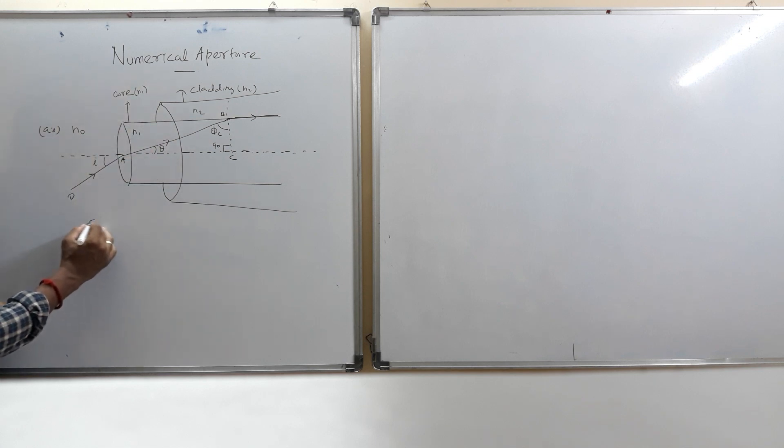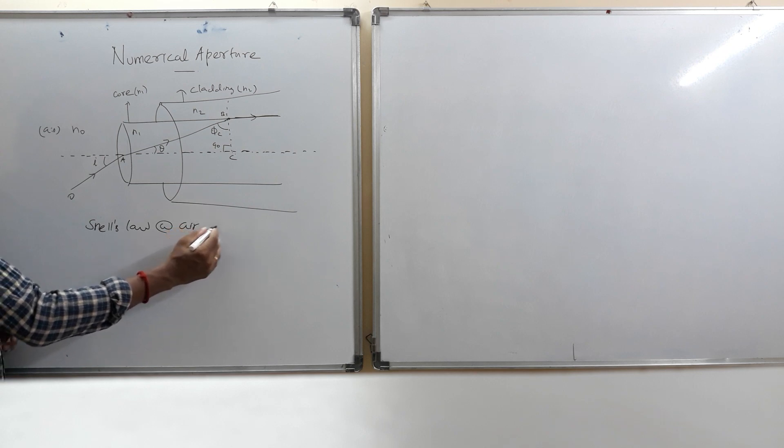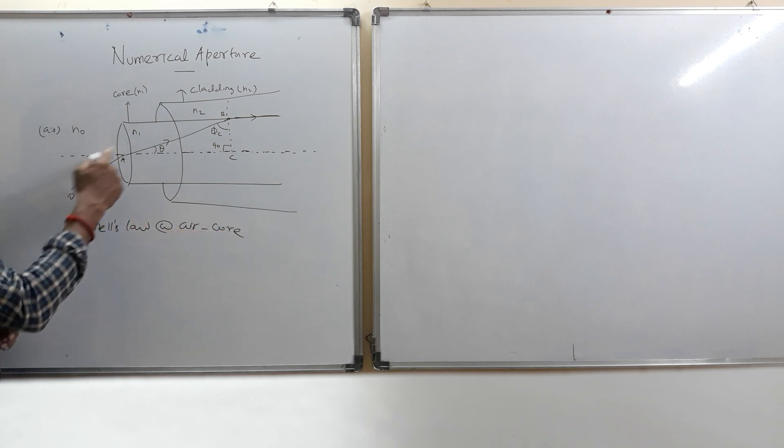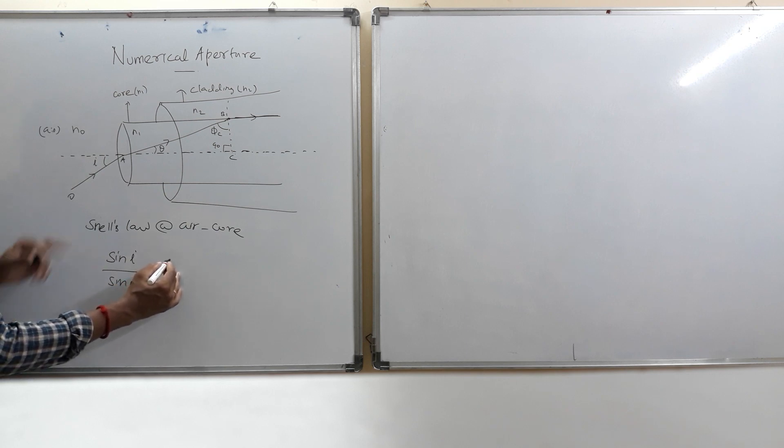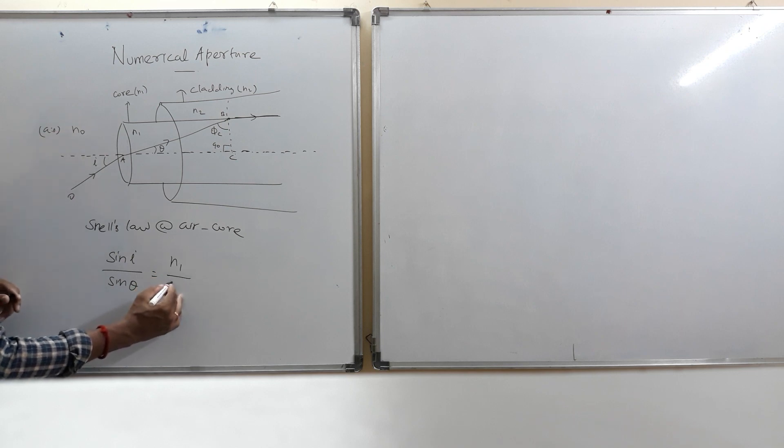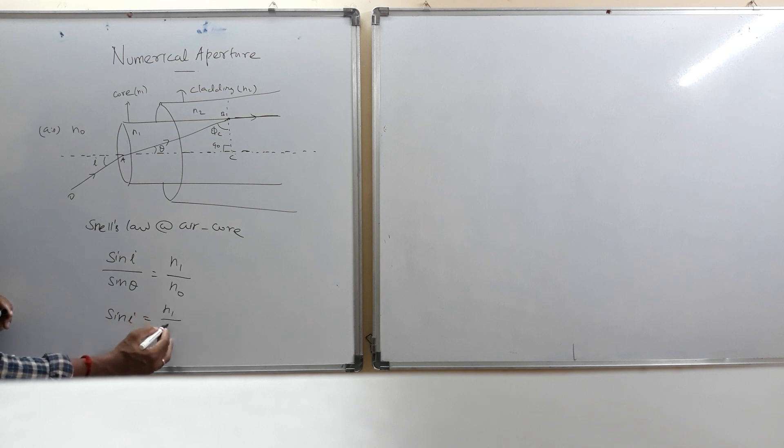So now I am going to apply Snell's law at the air core surface. Sine of angle of incidence, sine of angle of refraction theta is equal to the denser medium N1, rarer medium refractive index is N0. So now the sine i is equal to N1 by N0 sine theta.